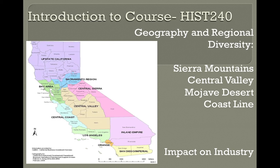Climate, Regional Diversity, and Industry. Historically, California's climate and regional diversity created five major industries that continue to provide employment opportunities and attract countless immigrants from different parts of the United States and around the world. While there are many industries that we can mention, historically the five major industries are real estate, cinema, tourism, agriculture, aviation, and computer science.